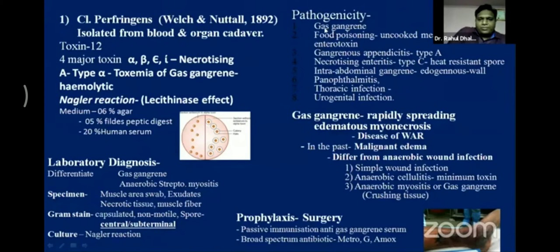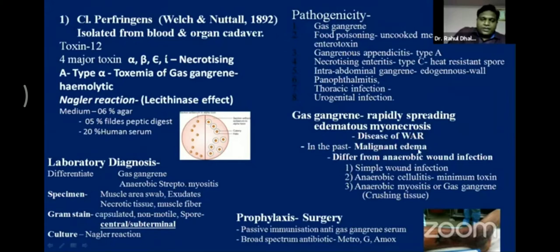Clostridium perfringens causes gas gangrene, food poisoning, gangrenous appendicitis, necrotizing enteritis, panophthalmitis, thoracic infections, and urogenital infections. Gas gangrene is a rapidly spreading edematous myonecrosis, also called the disease of war. These organisms are soil contaminants; when you sustain a deep injury directly into muscle tissue, gangrene starts to form.